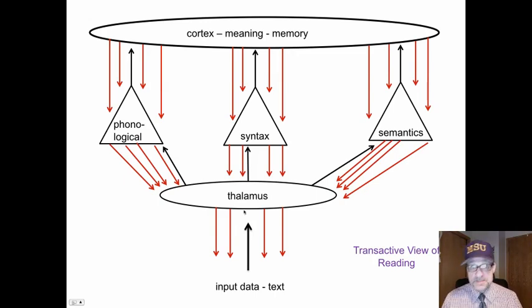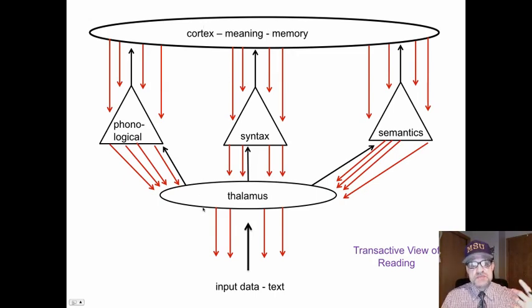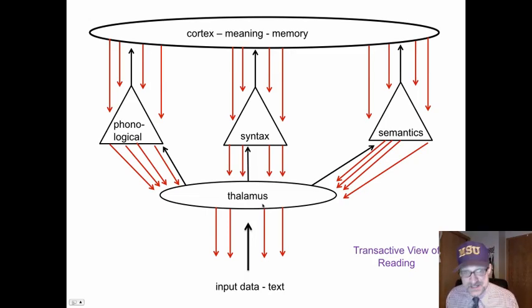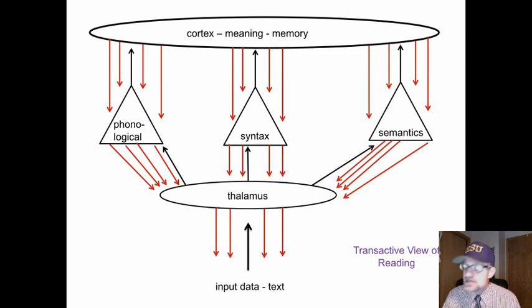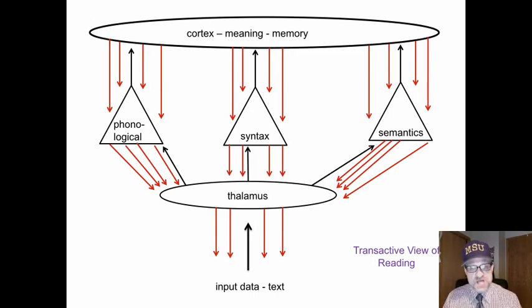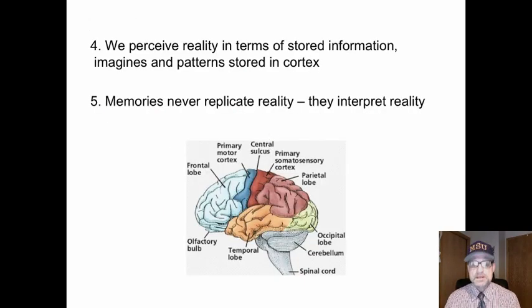What does that mean? It means we use information stored in the cortex to make predictions about what we're reading — we're always thinking a little ahead. We use information in the periphery to make guesses, and when our eyes move to that part, we either reinforce or reconstruct our guess. We use that for all of reality, but especially for creating meaning with text.